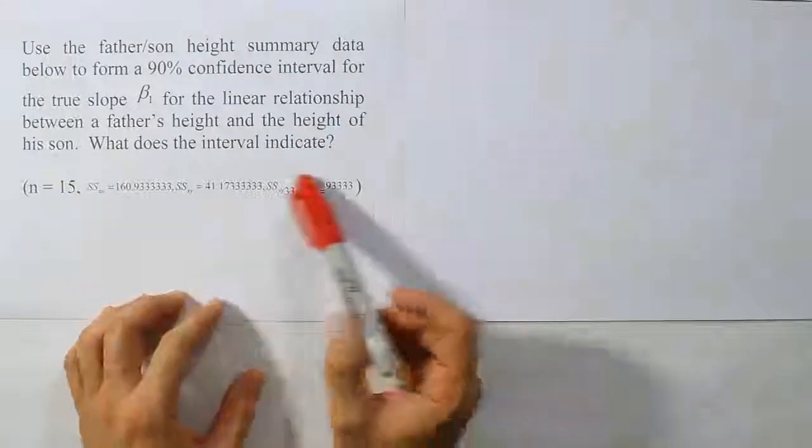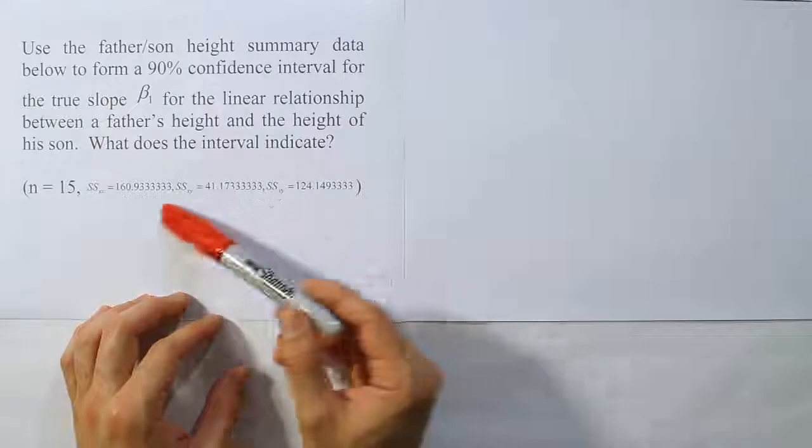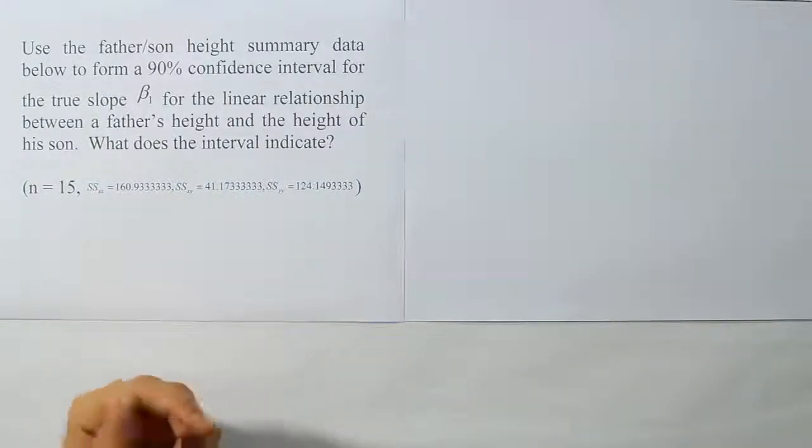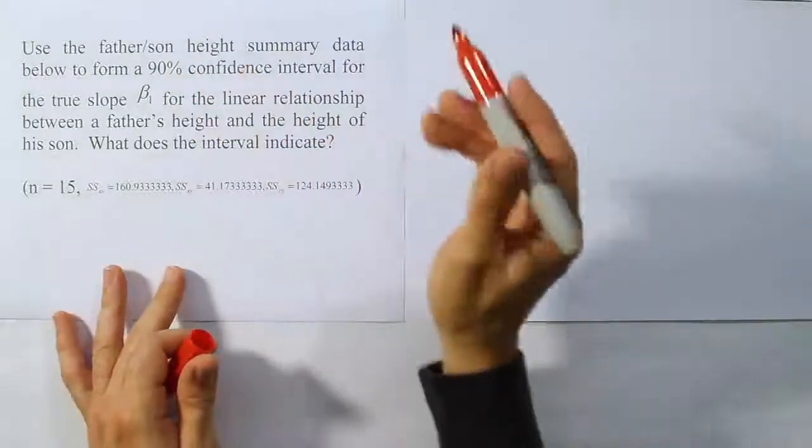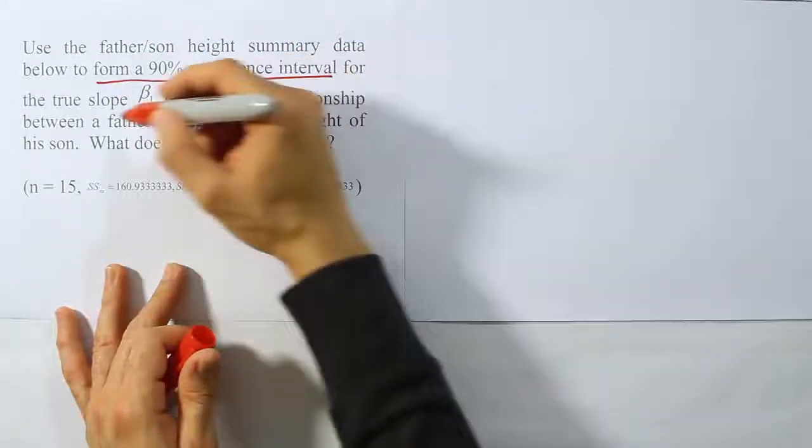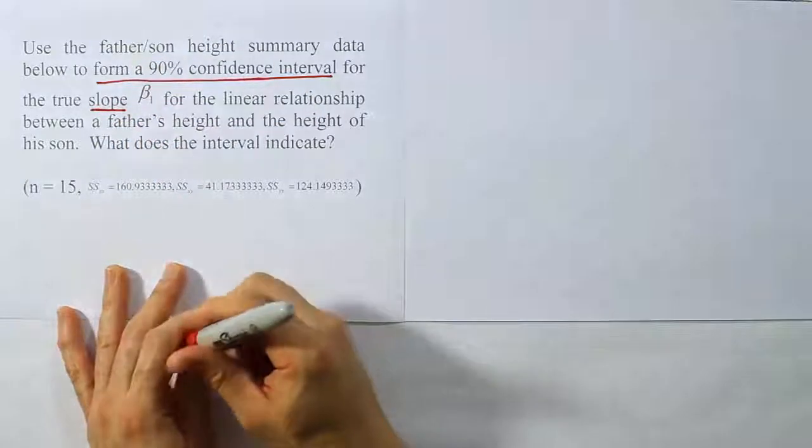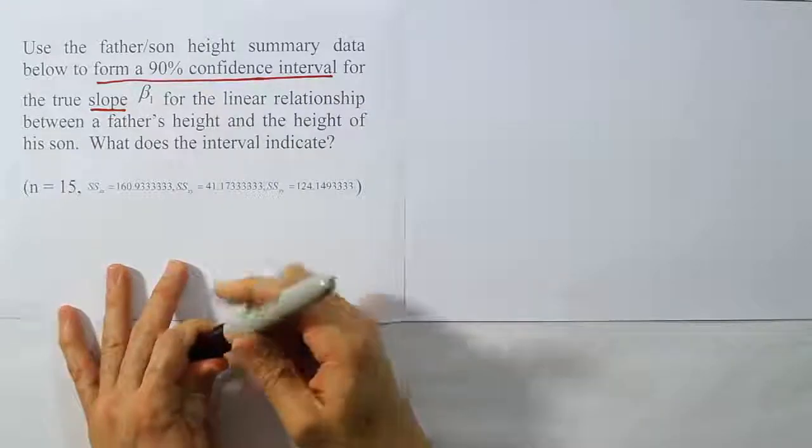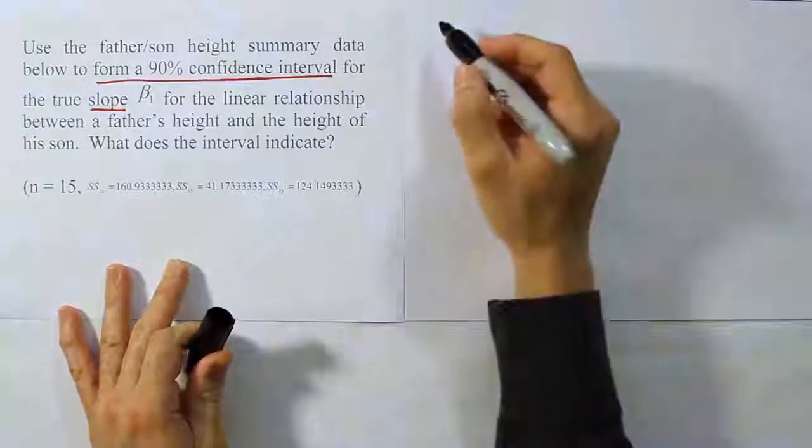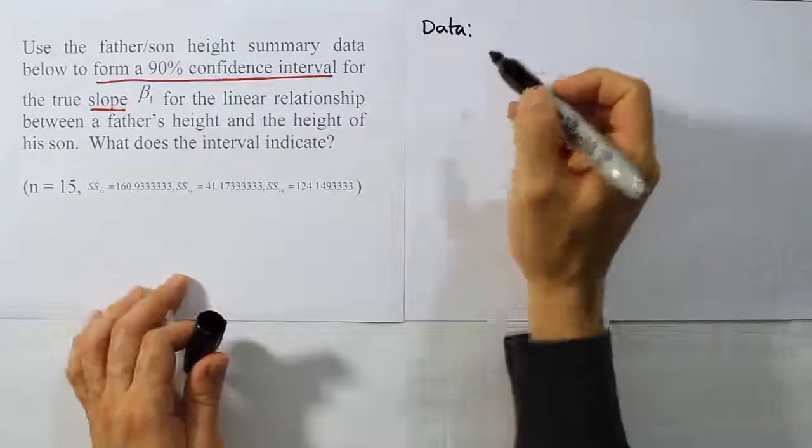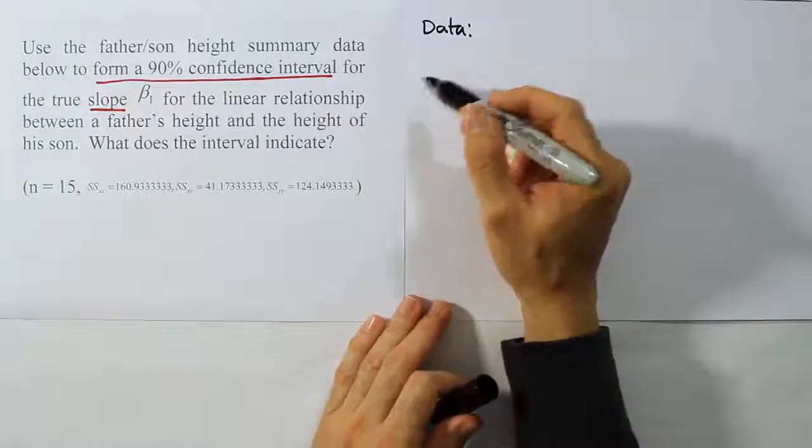Okay, so they give us some summary data below, but we need to do a lot more work on this set of numbers in order to get the data necessary to complete the confidence interval. First thing we should identify is they ask us to form a 90% confidence interval for the slope, beta 1. So we're doing a confidence interval and it's for the slope. First thing you want to do then is to write down the important piece of information for the problem. Again, this is our data step and it's the most difficult step in the confidence interval for this particular topic.